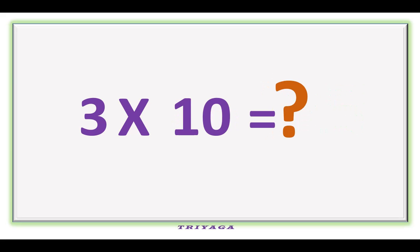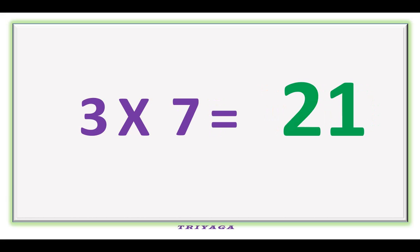3 times 10 is how much? It is 30. 3 times 7 is how much? It is 21.